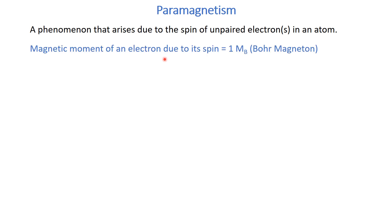The spin of an electron is associated with a magnetic moment of one Bohr magneton. So if an atom has one unpaired electron, its magnetic moment is one Bohr magneton. If there are two unpaired electrons, it is two Bohr magnetons. If there are three unpaired electrons, the magnetic moment is three Bohr magnetons, and so on.